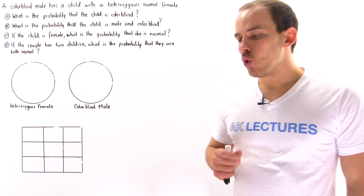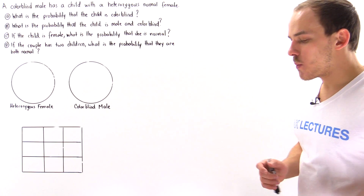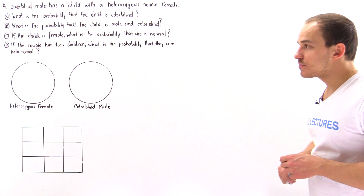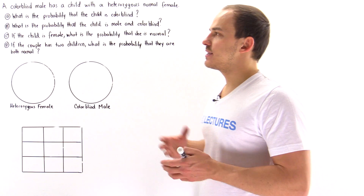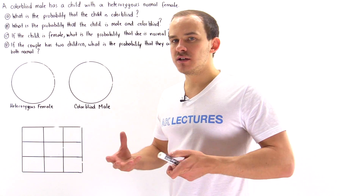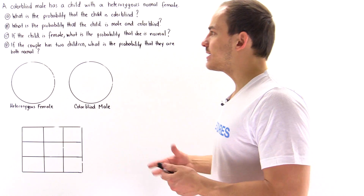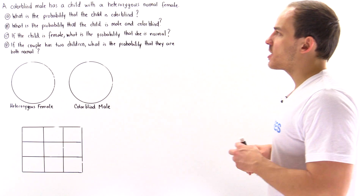Now that we know what sex chromosomes are, let's take a look at the following example that deals with genetics and the Punnett Square.